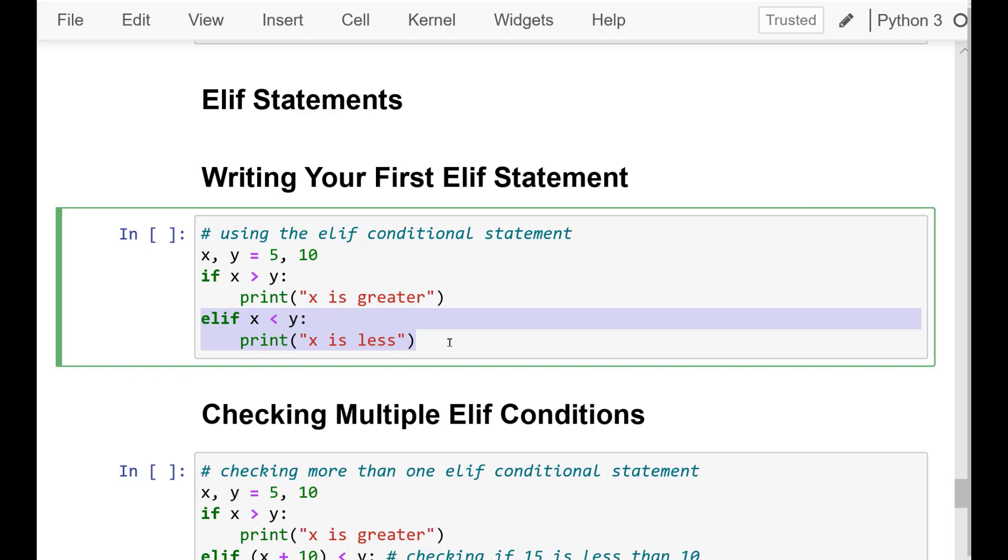However, once a single conditional statement returns true, all other conditionals are skipped, even if they are true. It works so that the first conditional to return true is the only block of code that runs.